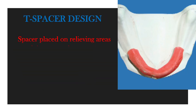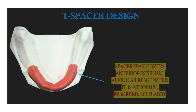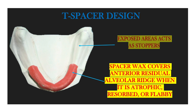For the T-spacer design for the mandible, spacer is placed on relieving areas and the exposed areas act as a stopper. It covers only the anterior residual alveolar ridge when it is atrophic, resorbed, or flabby. The spacer wax covers the anterior residual ridge area only under these conditions, and the exposed area acts as a stopper to help in proper orientation of the tray.